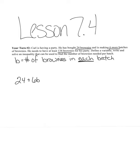And we know that he needs to have at least 138 brownies. So when we say "at least," that means the minimum number is 138 — so he could have more than. Our inequality sign here is going to be greater than, but he could also have exactly 138. So that makes our inequality sign actually greater than or equal to 138.